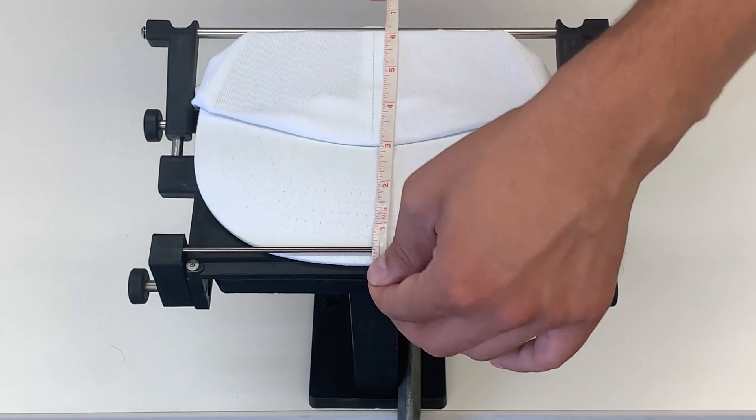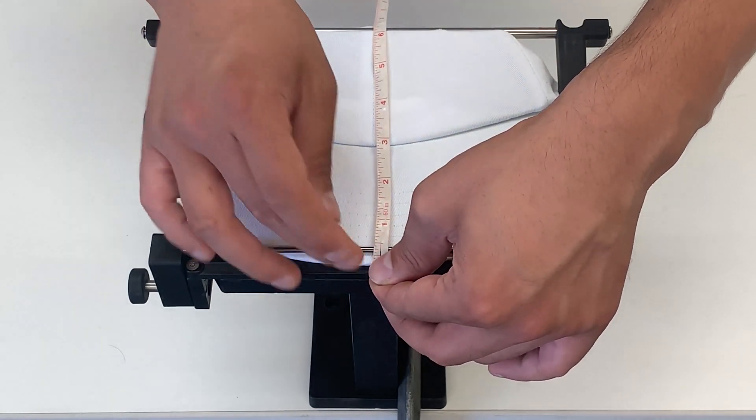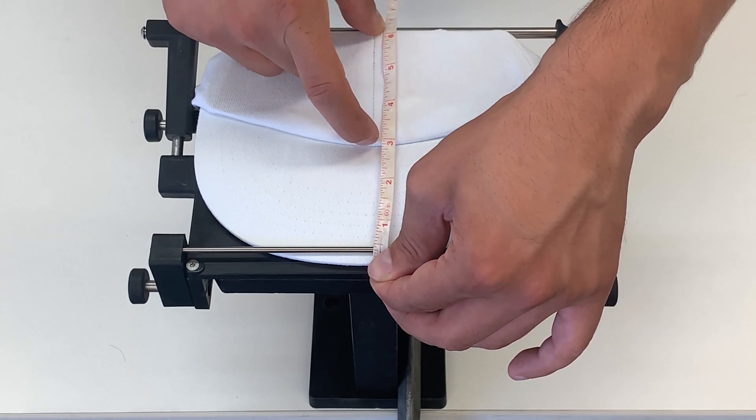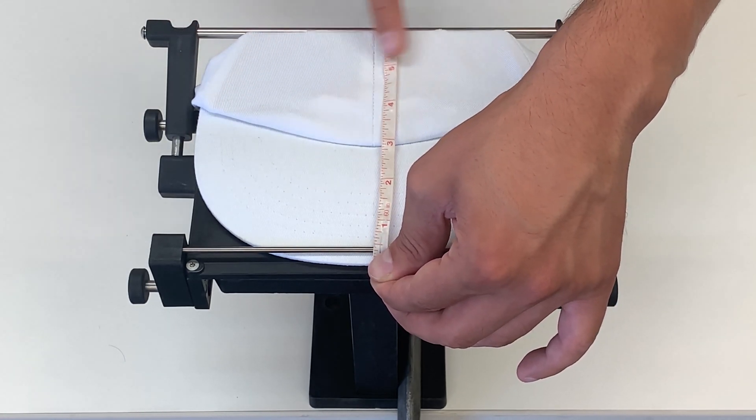The way that we aim our artwork is we measure down the center. As you can see here, three inches down from the center is the end of the bill and that's where the front panel starts. From three to six you can print all of the artwork that you want.